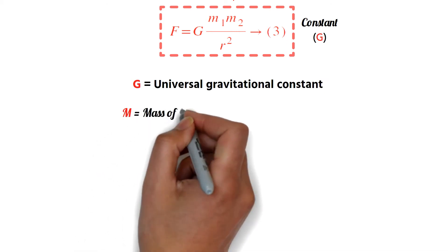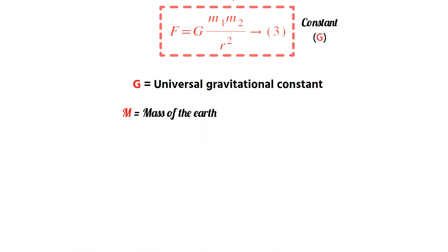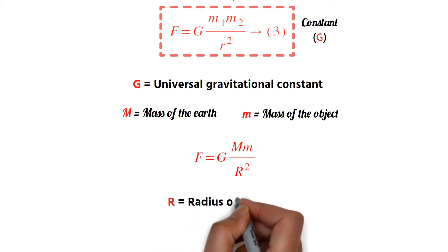Now, if capital M is taken as the mass of the Earth, and small m is the mass of any object present on the surface of the Earth, then the gravitational attraction between them is F equals G M m by R square, where R is the radius of the Earth. Since the object is on the surface of the Earth, the separation is taken as the radius of the Earth.